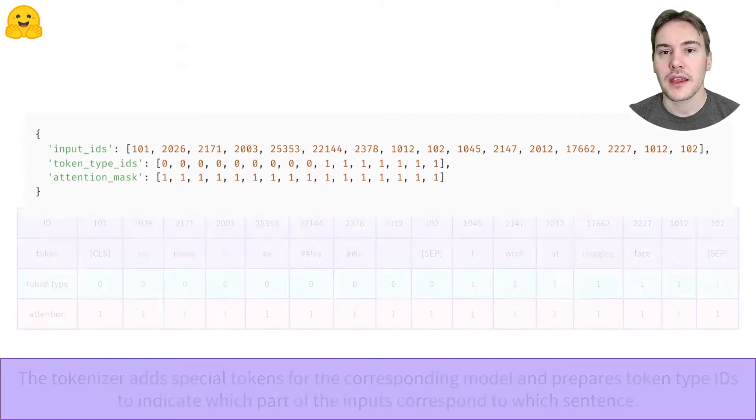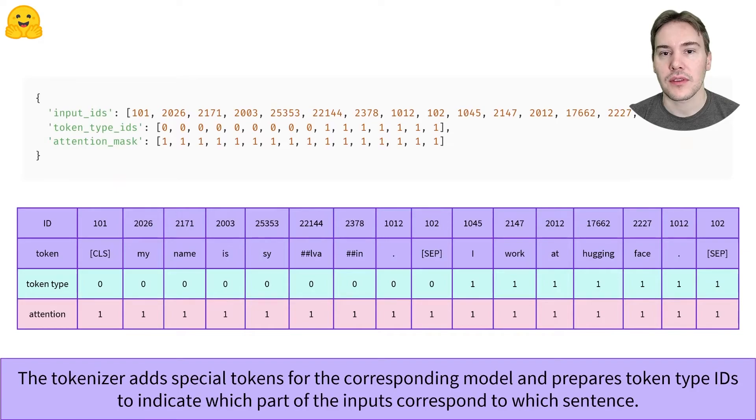Zooming in a little bit, here are the input IDs aligned with the tokens they correspond to, the respective token type IDs, and the attention mask.